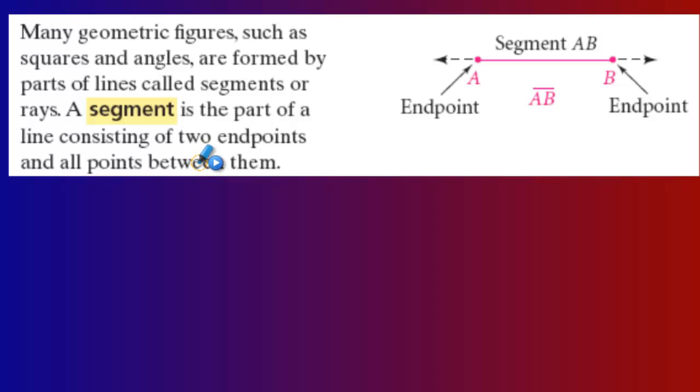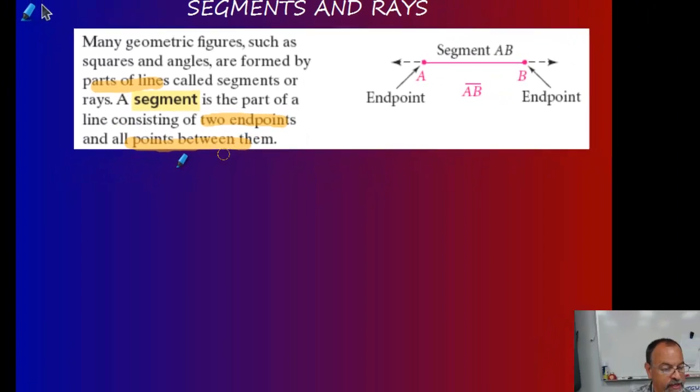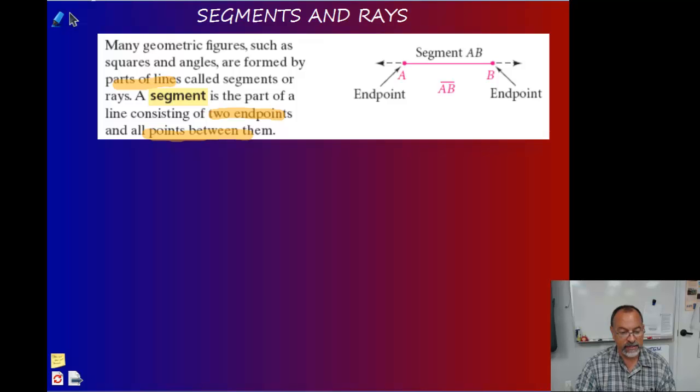We can use copiers and printing presses for that. We're not in the Middle Ages. We don't need to copy things by hand, we just want the key points. Many geometric figures such as squares and angles are formed by parts of lines called segments. So a segment is a part of the line consisting of two endpoints and all the points between them.